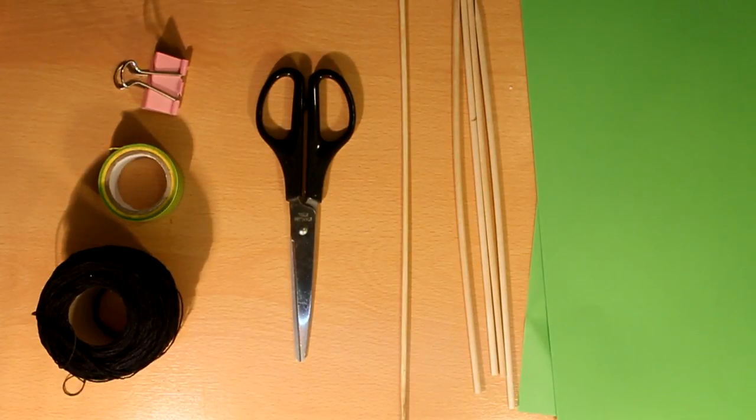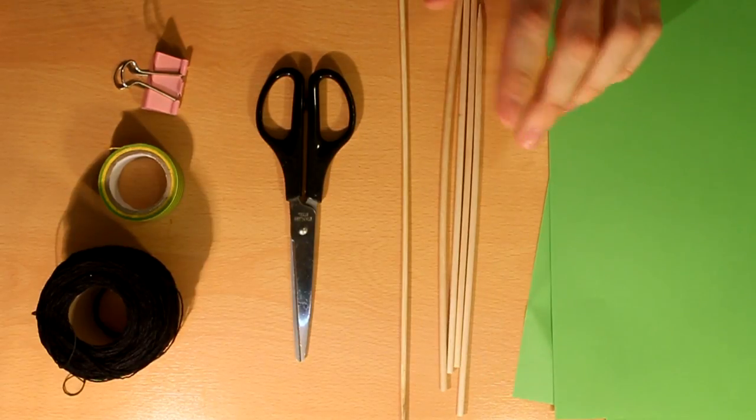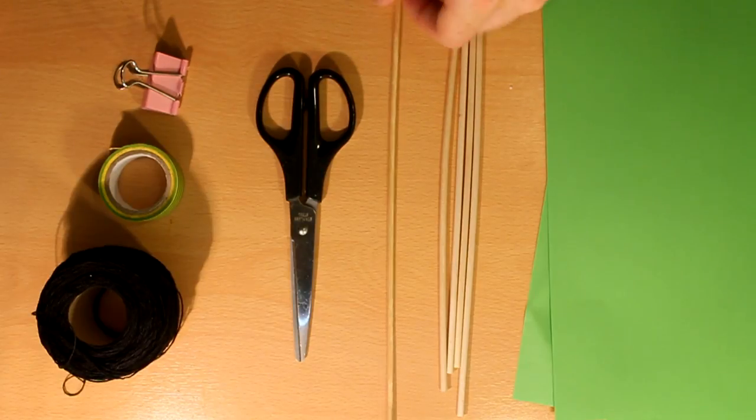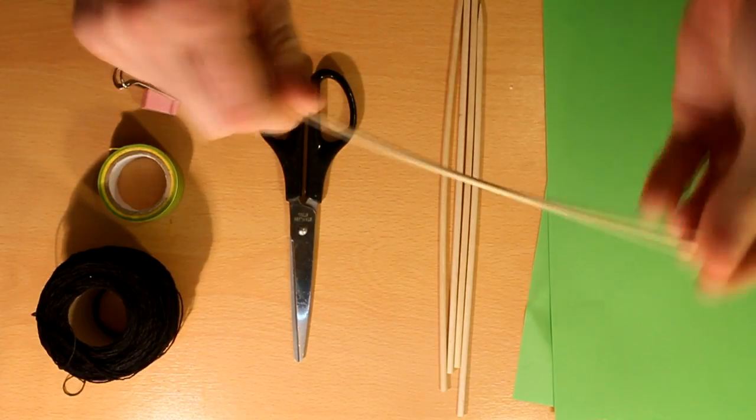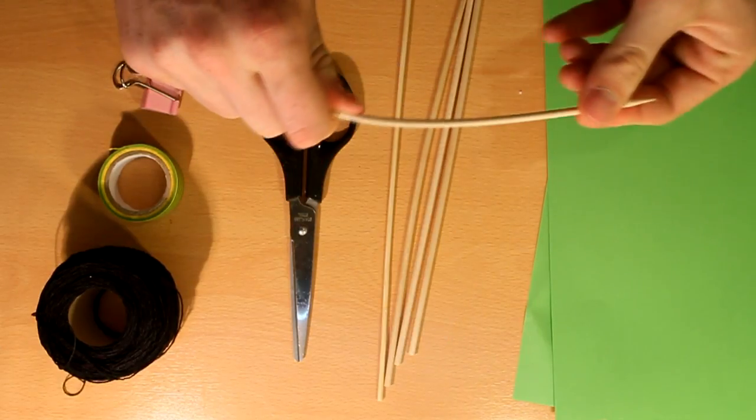So guys, let's start by the materials that you'll need. You'll need some sheets of paper. We used green, but you can use any color that you want. Then you'll need some sticks. You can use these bamboo sticks or you can use barbecue sticks, but we recommend that you use bamboo sticks.